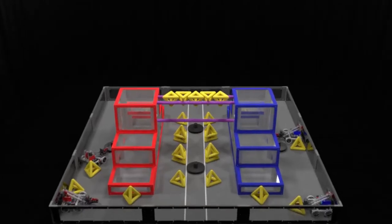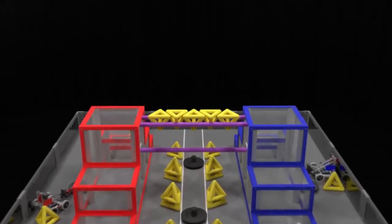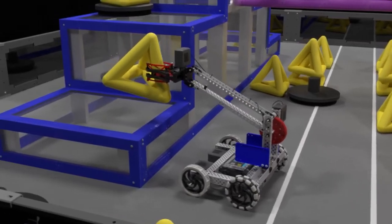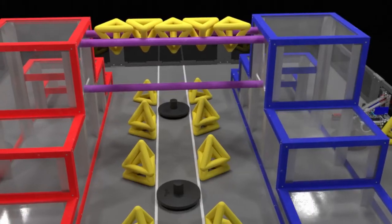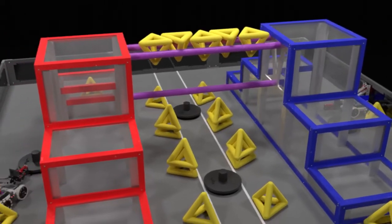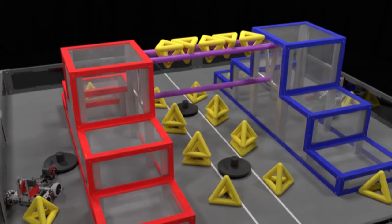Each match begins with a 15-second autonomous period where robots score on their side of the field without help from their drivers. The alliance that scores more points in the autonomous period is awarded with 6 bonus points added to the final score at the end of the match.